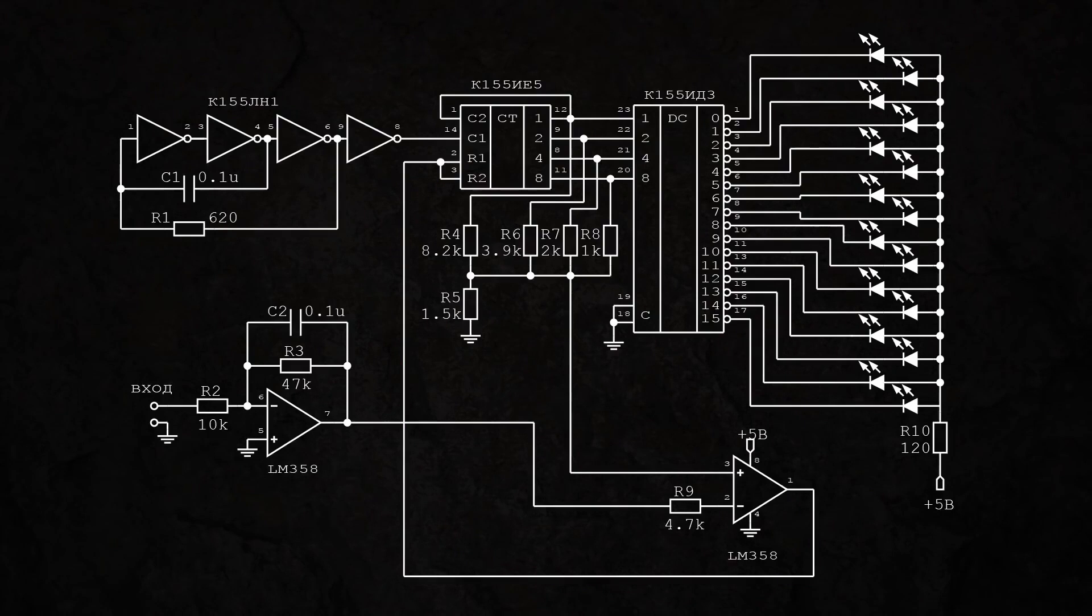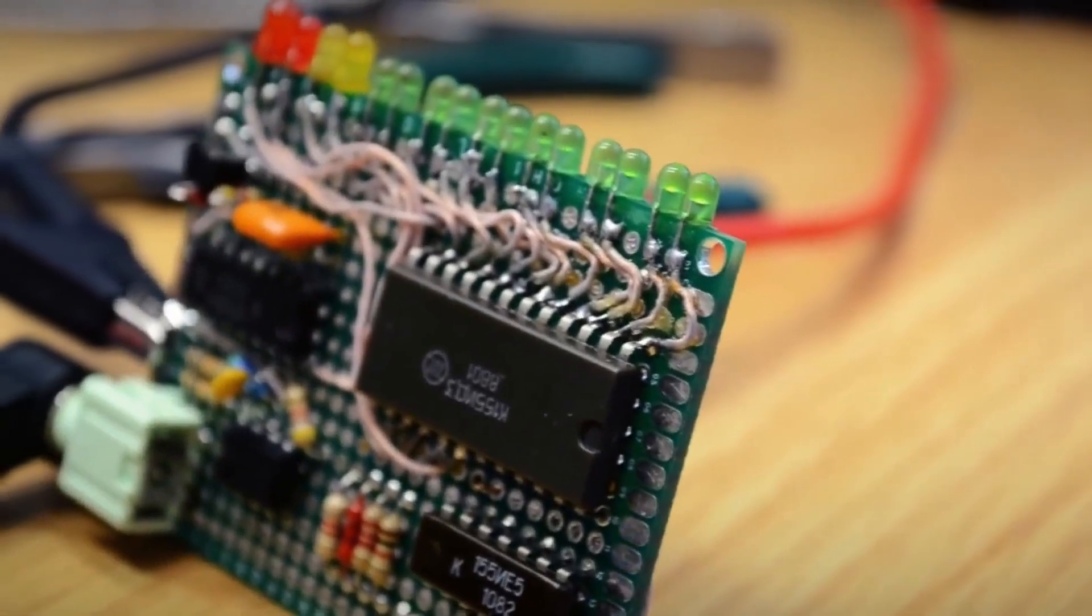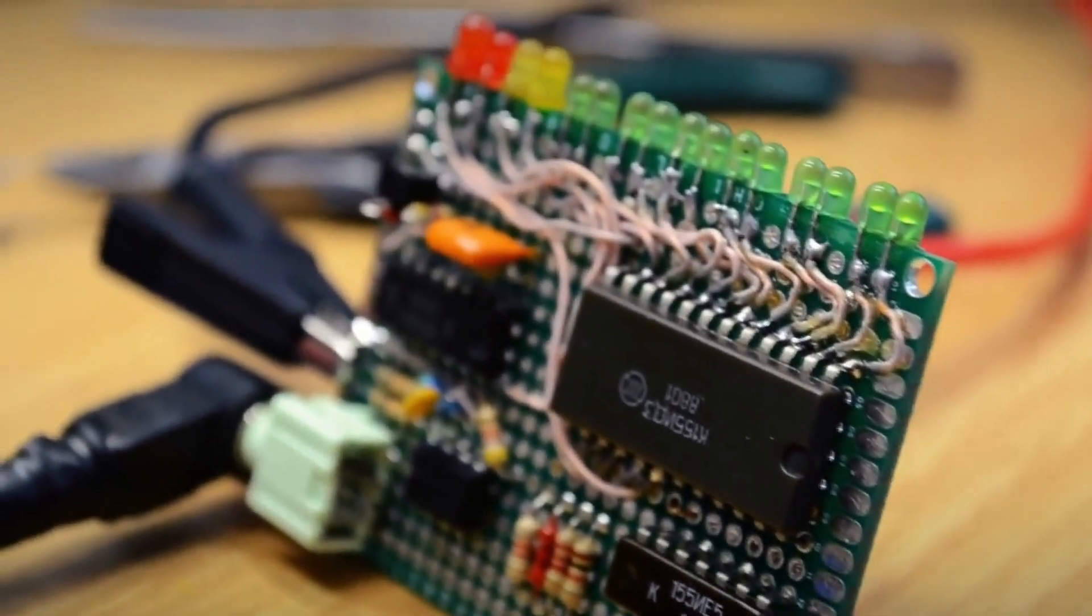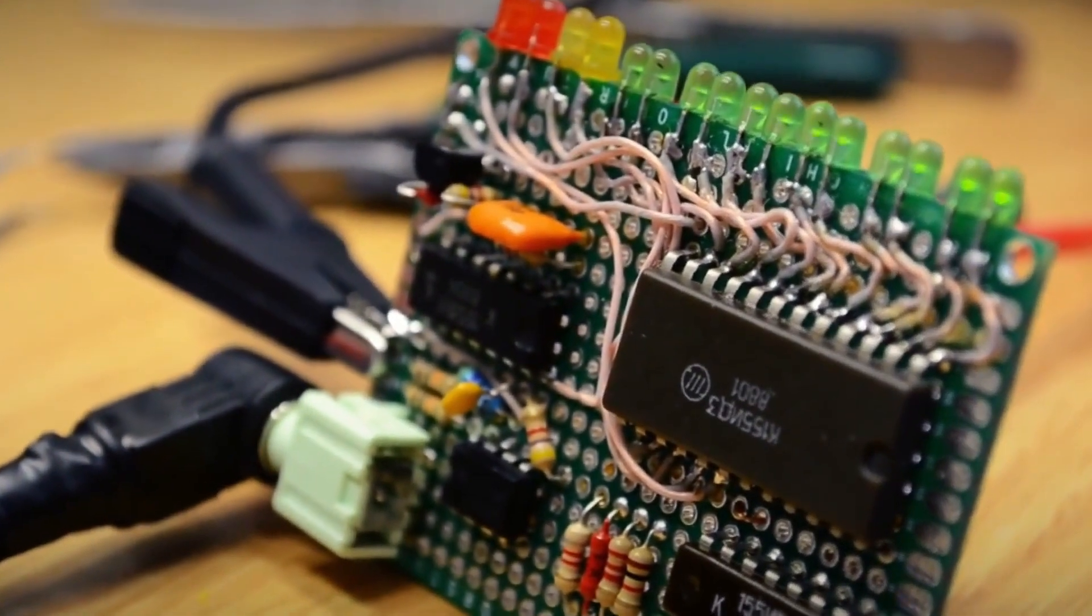This circuit can also be modified to output two channels. But what am I talking about? This is discrete logic. The circuit can be improved endlessly. Write in the comments what ideas you have for refining this circuit.